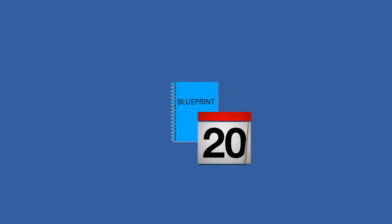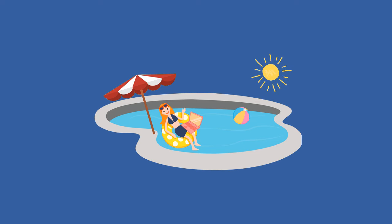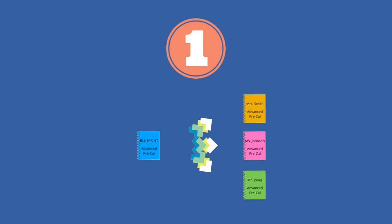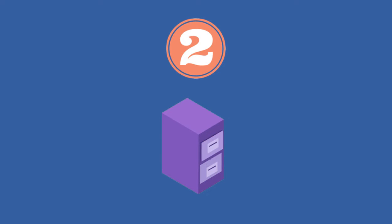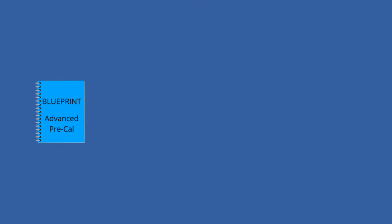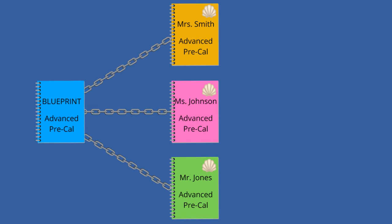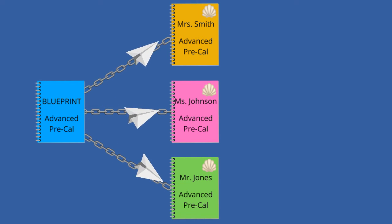Blueprints don't get deleted from year to year and you can work in them over the summer if you would like. There are two reasons we use blueprints: number one, because it allows teachers in a PLC to build content in one place and then distribute that content to their individual shell courses; and number two, because it helps us easily keep your content from year to year. One of the first things that your DLC will do when the shell courses are created in the fall is to associate the shell courses with your blueprints. Once that association is made, all the content in your blueprint will automatically sync into your shell courses. Everything you did last year in your blueprint is now in your new course and you're ready to roll.